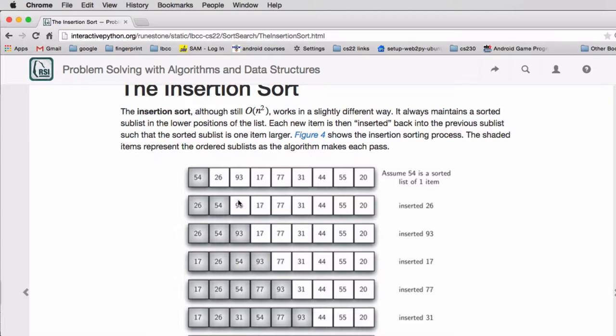So the 93 is going to go after the 54. The 17 though is going to go at the beginning of the already sorted list. So the 17 is going to be compared with 93 and then be compared with 54 and finally compared to 26, and it will be stuck in there.